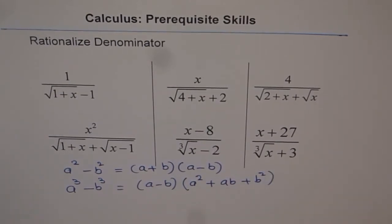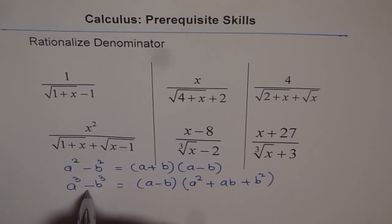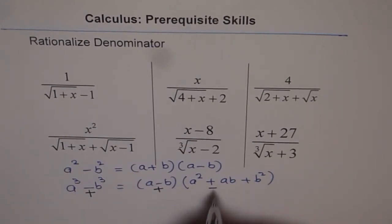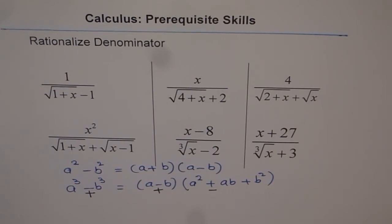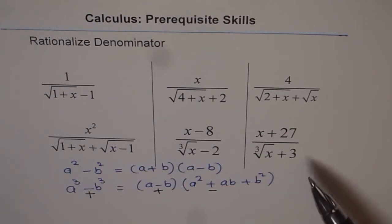Now, in difference of cubes and sum of cubes, we can actually factor sum of cubes also. If it is a cube plus b cube, then this is the simple change. So a cube plus b cube is a plus b times a square minus ab plus b square. So that will help you in the last two questions. That is how we need to rationalize.